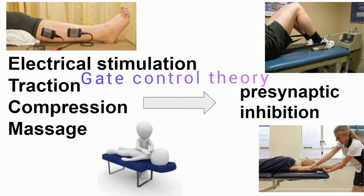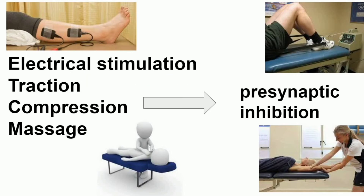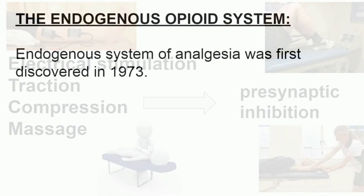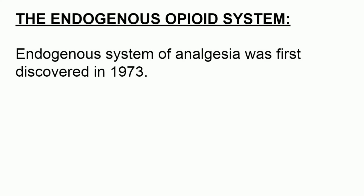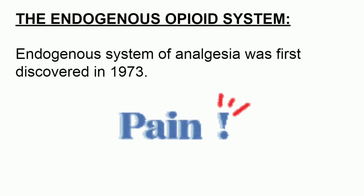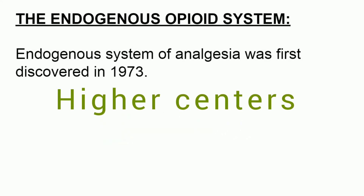It was proposed in the year 1965. At the level of the spinal cord, pain is closed — the gate is shut. From the spinal cord, the pain impulse is taken to the higher centers.